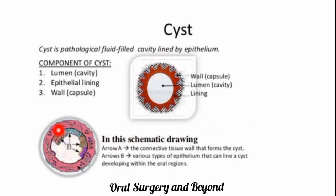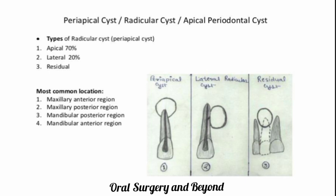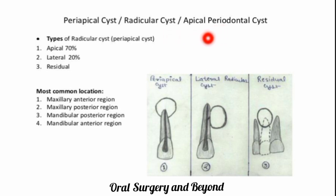Here is a schematic representation of the cyst. Now, regarding the types of radicular cyst — if we see the main types, there are three: the apical radicular cyst, the lateral radicular cyst, and the residual cyst.